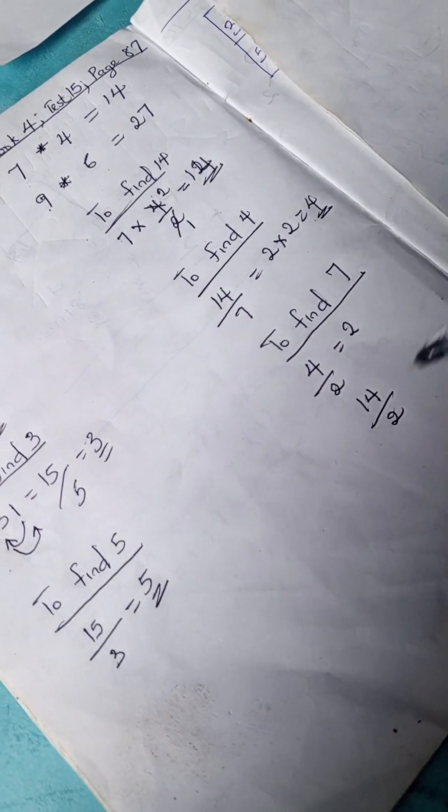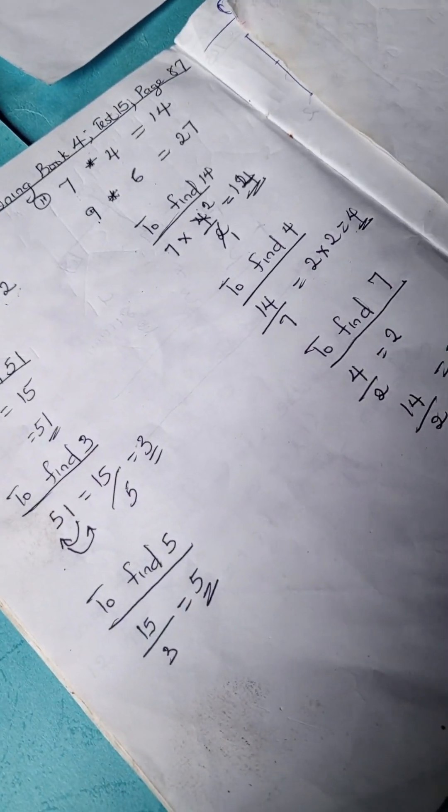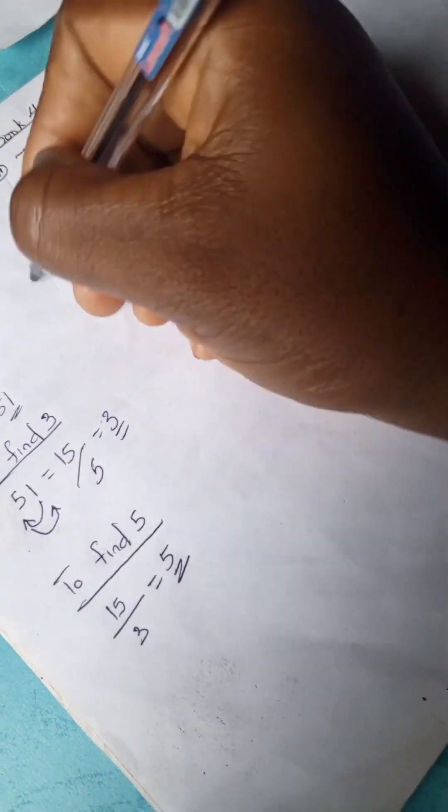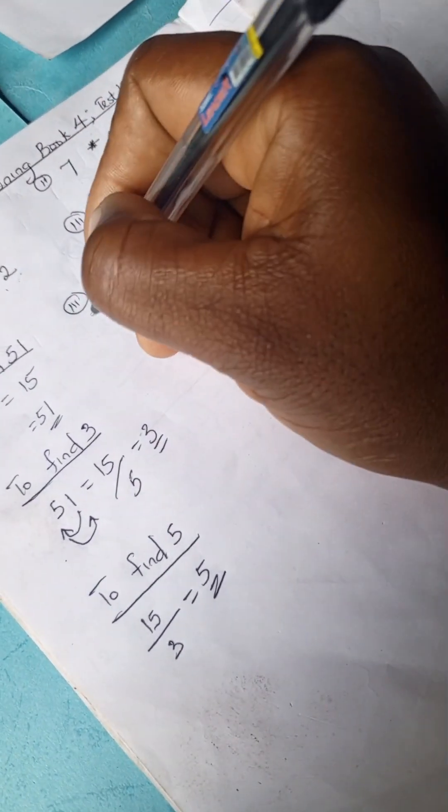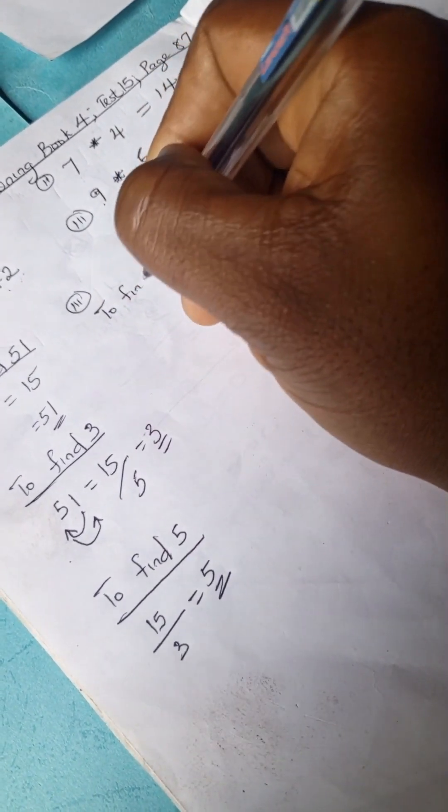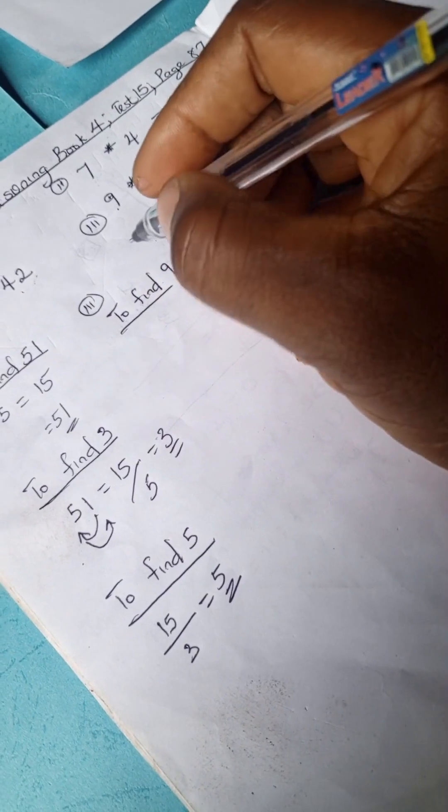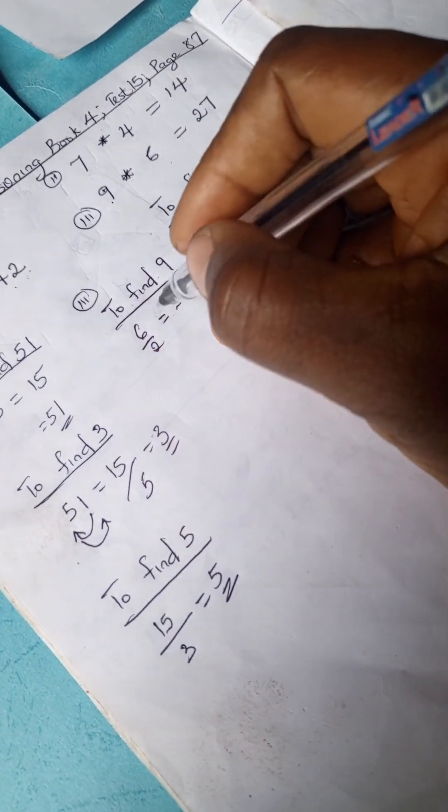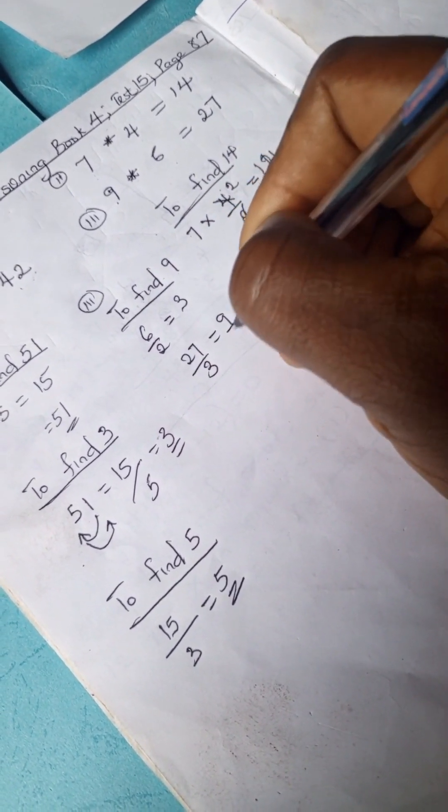If you try the same method for this, we can actually try out for example 3. Let's work on example 3 and see if we're going to get the same answer. To find 9, we have 6 divided by 2 is 3, so 27 divided by 3 is 9.